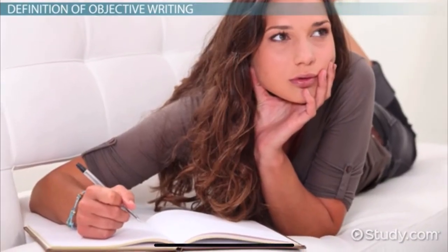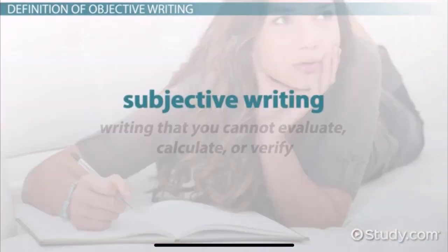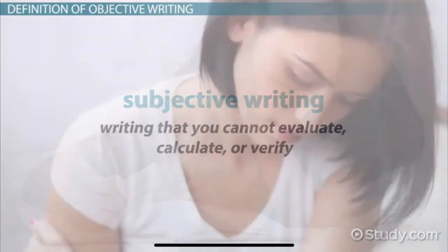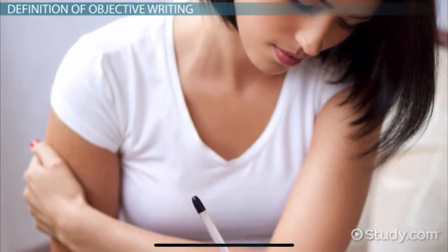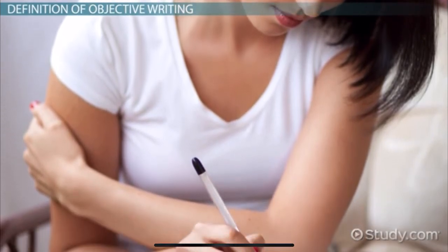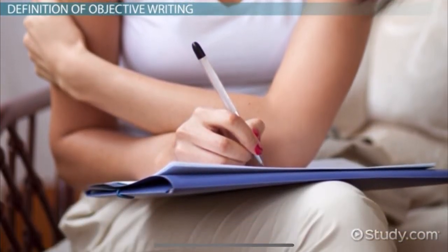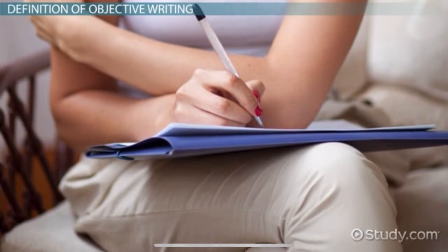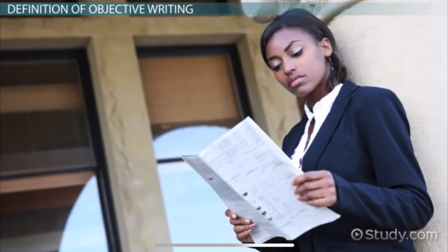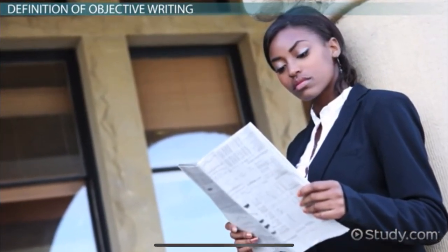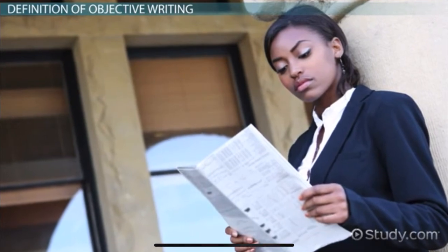It's important to differentiate objective writing from subjective writing, which is writing that you cannot evaluate, calculate, or verify. Subjective writing might express feelings, opinions, and judgments. This would come in handy for writing a personal essay or an opinion column for a paper, but should not be used when the goal is to simply inform the audience.